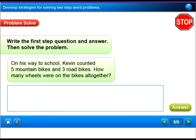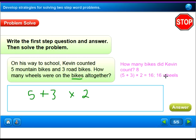Here's another problem I want to see if you can do on your own. It's a two-step word problem. On his way to school, Kevin counted 5 mountain bikes and 3 road bikes. How many wheels were on the bikes altogether? So to write that, you need to make sure you write 5 mountain bikes plus 3 road bikes, and then you need to times it by how many wheels are on a bike - usually 2. 5 plus 3 times 2, did you get this answer? 16 wheels. Notice they put parentheses around the 5 plus 3. If you don't put the parentheses, you most likely will get it wrong.